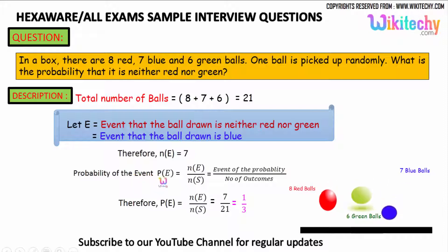The probability of the event is equal to number of possible events divided by number of outcomes. So 7 divided by 21 is equal to 1 by 3. The probability of getting the blue ball, or neither red nor green ball, is 1 by 3.